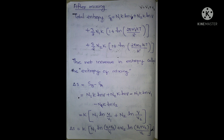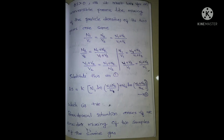The result is ΔS = k times [n₁ log(V/V₁) plus n₂ log(V/V₂)], where V = V₁ + V₂. Therefore ΔS = k times [n₁ log((V₁+V₂)/V₁) plus n₂ log((V₁+V₂)/V₂)]. This is a positive value.